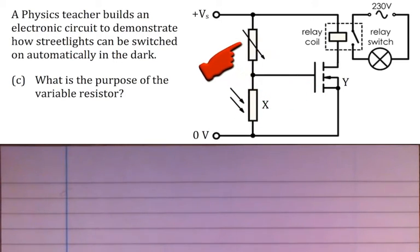We increase the voltage across the variable resistor. Now, how we do that is we increase the resistance of the variable resistor. So, if we increase the resistance of the variable resistor, that means the voltage across the variable resistor increases. And that then means that the voltage across the LDR decreases.